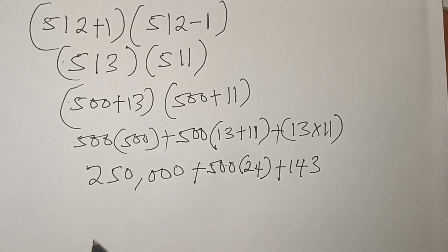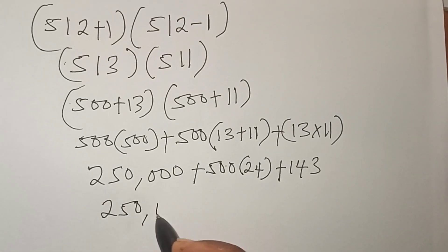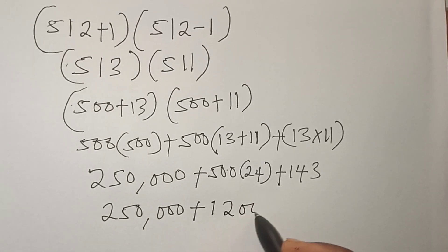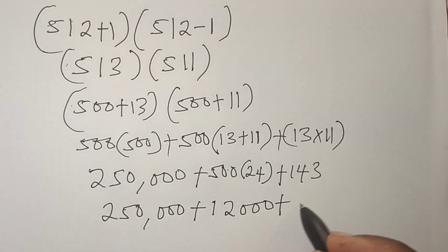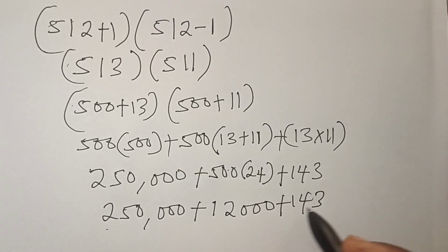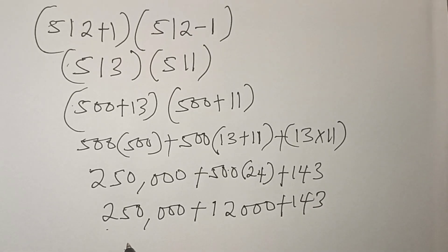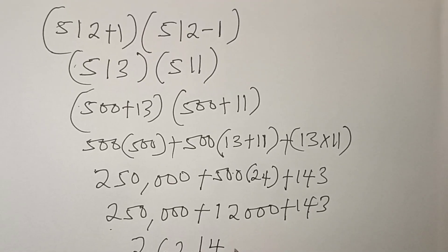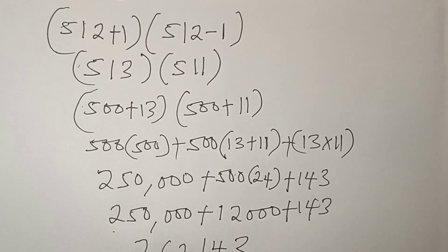So this is 250,000 plus 12,000 plus 143. After adding it all, you get 262,143. Thank you for watching.